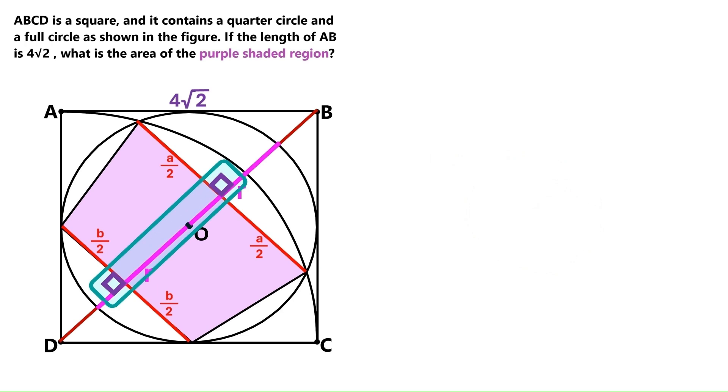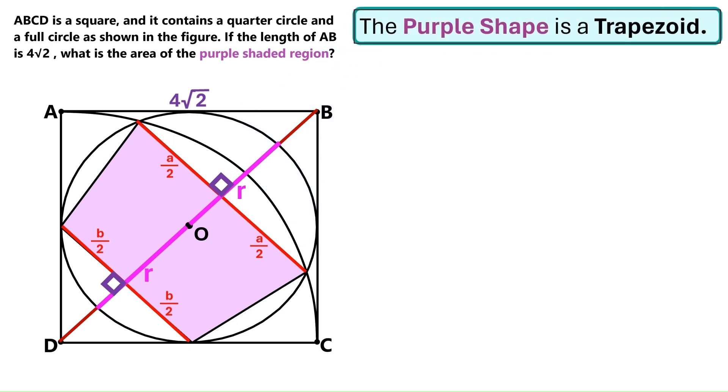Now we've got two right angles on the same line, and that tells us these two line segments are parallel, and that this shape is a trapezoid, because it's a quadrilateral with two parallel sides. So let's keep this information up here.